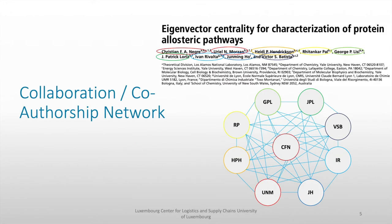For example, if there will be nine authors who wrote one paper, then it will produce a connected graph because each one of them is connected with each other, which is an example here on our screen.